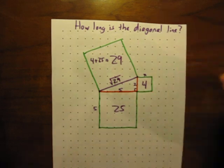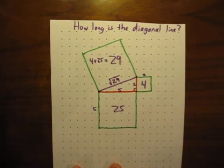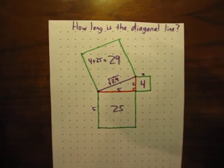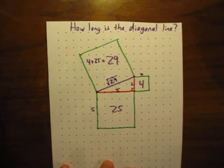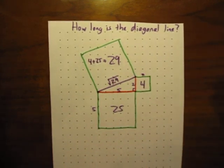And that's a decimal. If you did that on your calculator, it's a decimal that goes on forever and ever. So to leave it as an exact value, I think I'm going to just leave it as the square root of 29.